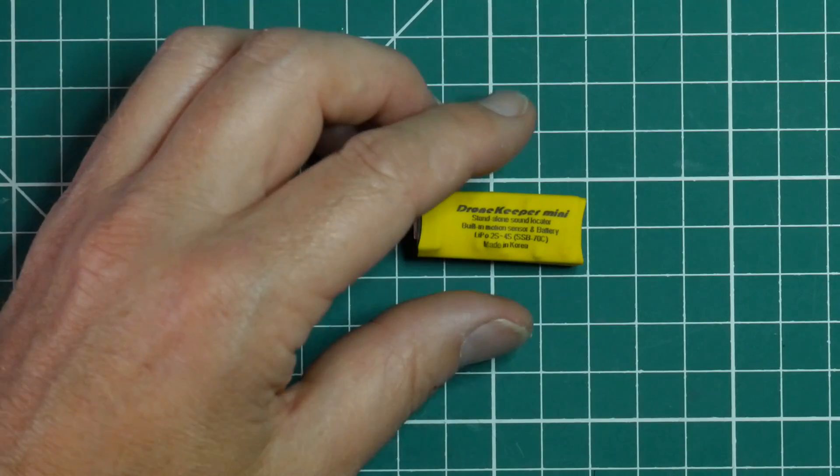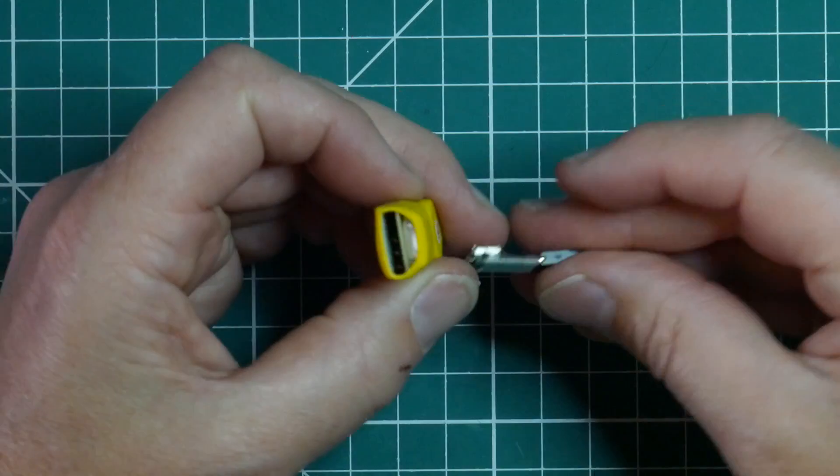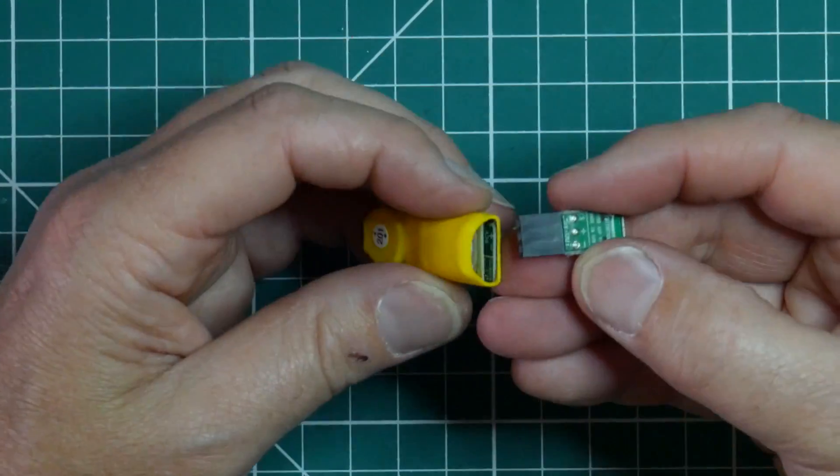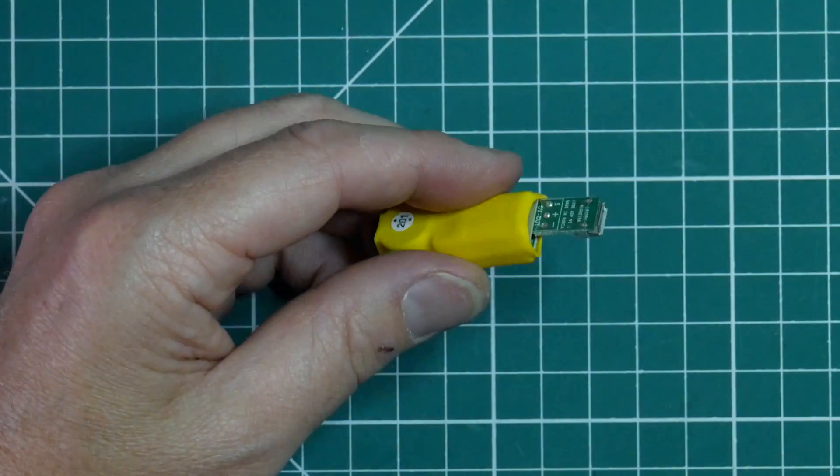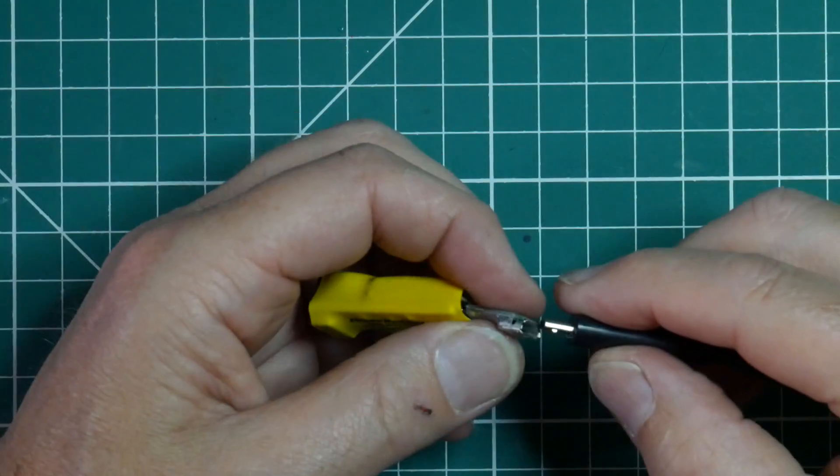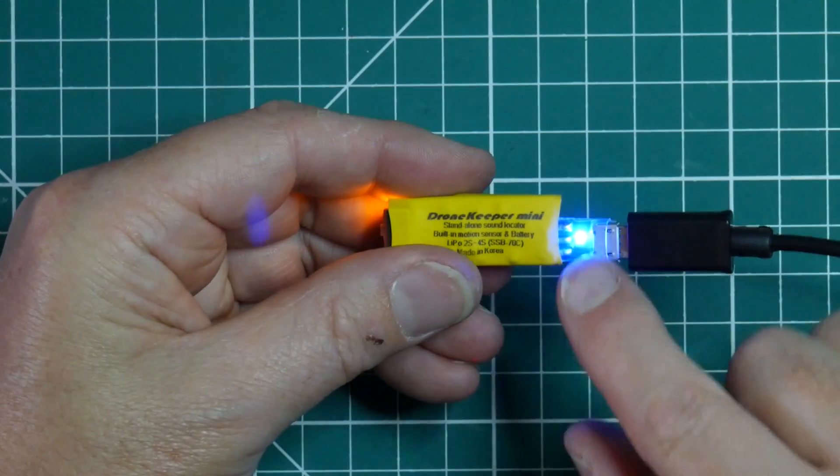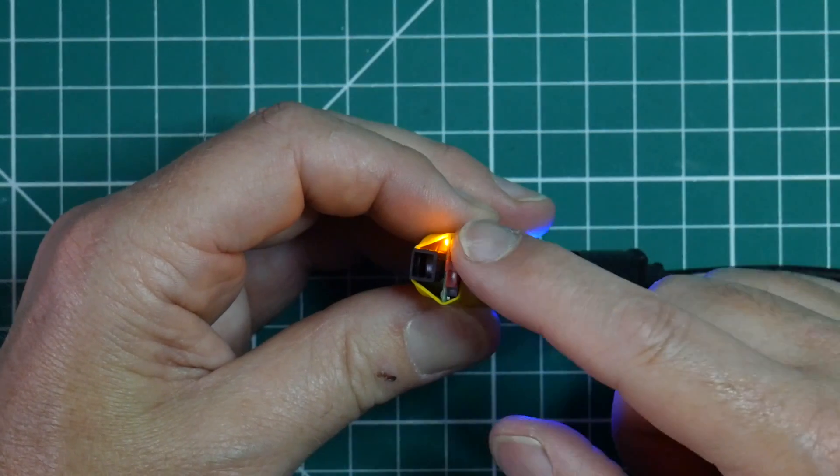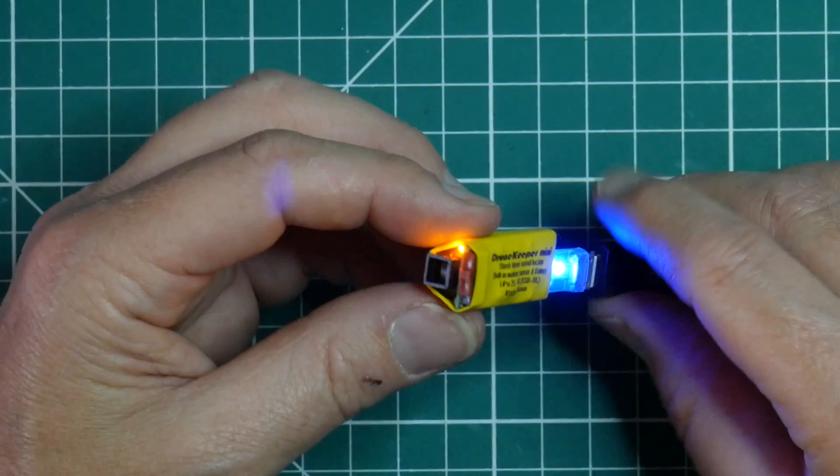You can also use a standalone USB charger to charge the drone keeper battery. They supply this little adapter here, which you plug in this way around. It's a bit difficult to see. I've got a USB charger here. Plug that in. And the blue LED is showing that you're getting power from the USB charger. And the yellow LED is showing that the drone keeper battery is charging. And this will turn off when it's fully charged.